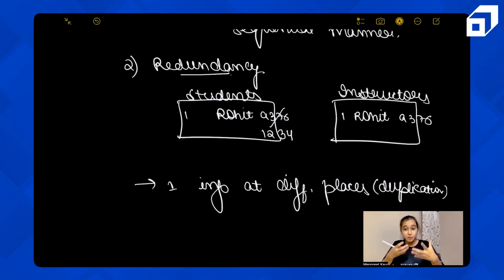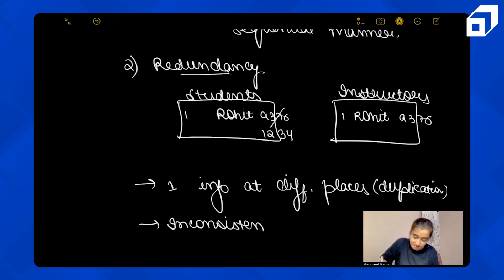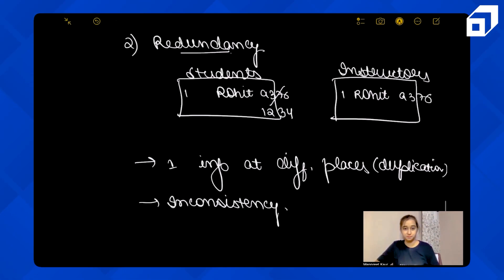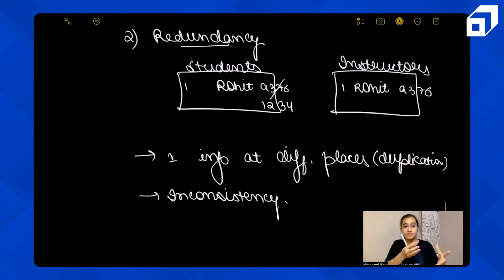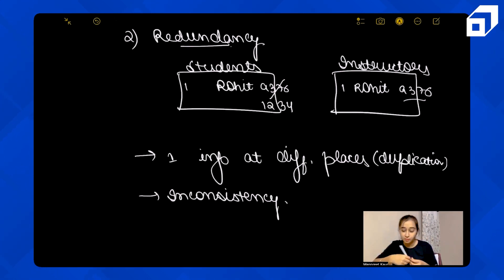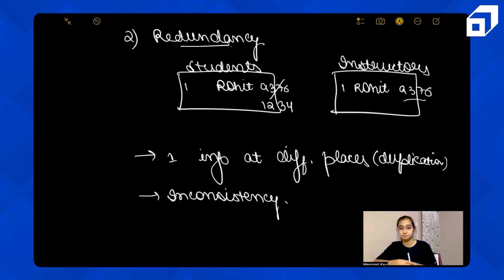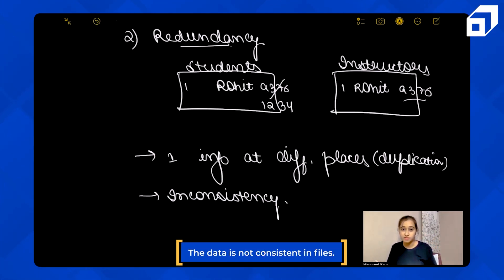This redundancy leads to another problem: inconsistency. Inconsistency means the data is not consistent. If you want to call Rohit, is there any way to know which phone number is correct — 9376 or 1234? There is no way to determine which is the latest number. So redundancy creates inconsistency, meaning the data is unreliable.